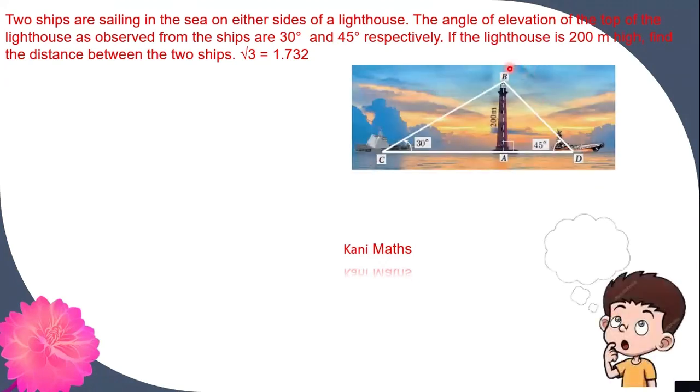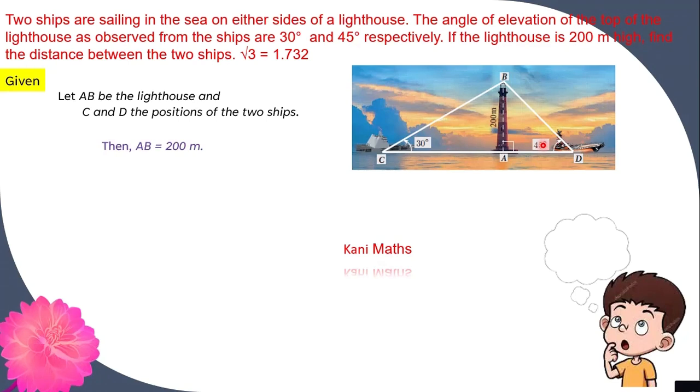Okay, let AB be the lighthouse, and C and D are two ships. The angles are 30 degrees and 45 degrees. The given AB is the lighthouse, C and D are positions of two ships. Then AB is equal to 200 meters.